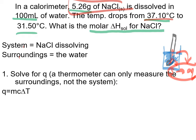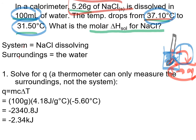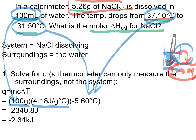We use 100 grams of water (converting milliliters to grams), a specific heat capacity of 4.18 J/g°C, and a temperature change of final minus initial: 31.5 − 37.1 = −5.6°C. It's very important to put that in as a negative so your answer comes out with the right sign. This gives us −2340.8 joules moving from the water into the process of dissolving the crystal.